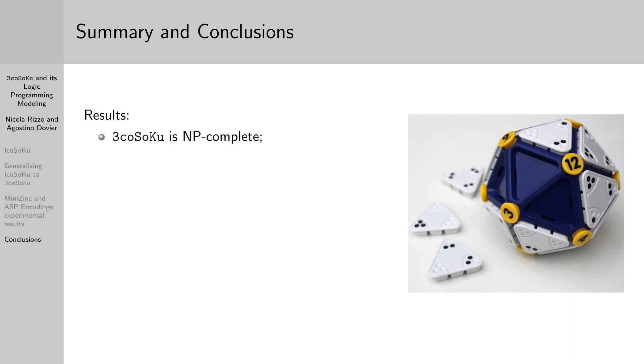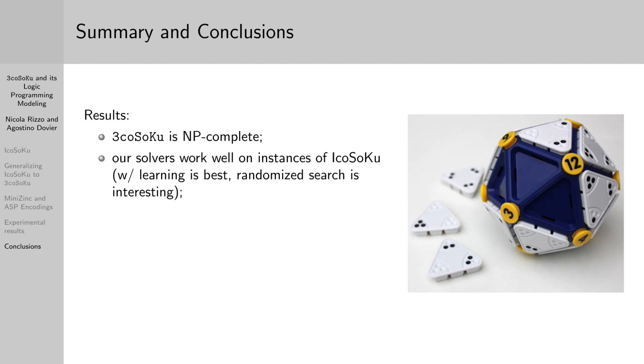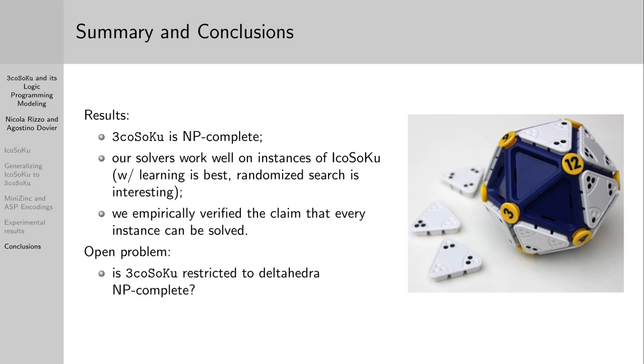Okay, so to recap, 3coSoKu is an interesting problem from the point of view of complexity since it is NP-complete. Our solvers work really well on instances of Icosoku. Those who use learning are the best, but randomized strategy is interesting and could inspire an actual strategy to solve the puzzle by hand. We also verified the claim that every instance of Icosoku can be solved. There are still some questions to answer, the most important being the NP-completeness of Icosoku if we impose the playing field to be a deltahedron, that is, a polyhedron with equilateral triangles as faces.